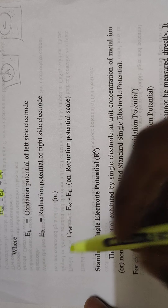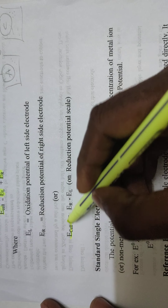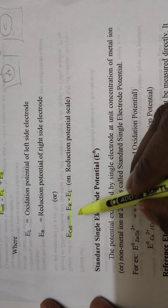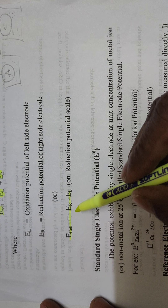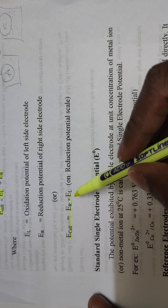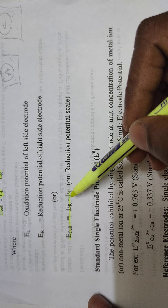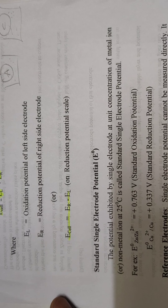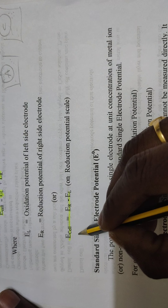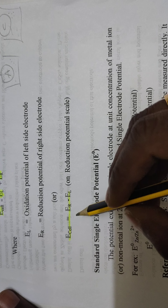Always the electrons move from the left-hand side electrode to the right-hand side electrode. That means electrons move from anode to cathode — with some force, electrons move from anode to cathode. One electrode is dipped in its own salt solution and another electrode is dipped in its own salt solution. Anode is indicated with a negative sign and cathode with a positive sign. That force is called electromotive force.